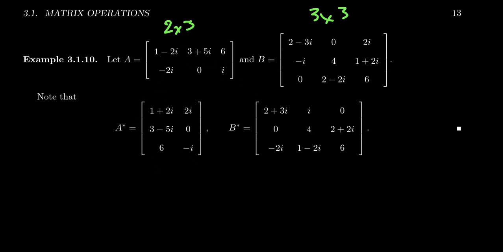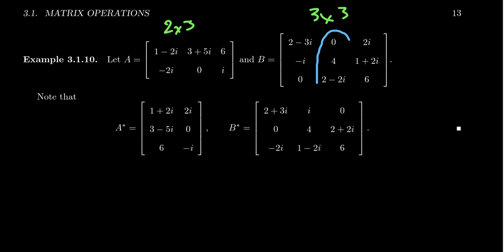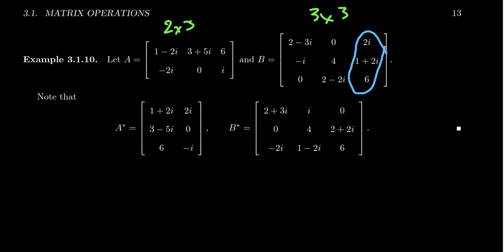For B, if we want to compute B star, we can think of it in terms of columns. The first column of B becomes the first row of B star — but take conjugates: 2 minus 3i becomes 2 plus 3i, negative i becomes i, and 0 becomes 0. The second column of B becomes the second row of B star, also taking conjugates: 0 stays 0, 4 stays 4 since those are real numbers, but 2 minus 2i becomes 2 plus 2i. Taking the third column, that becomes the third row of B star. The most common mistake with complex matrices is forgetting to do the conjugate. The conjugate of 2i becomes negative 2i, the conjugate of 1 plus 2i becomes 1 minus 2i, and the conjugate of 6 is again 6 — it's just a real number.